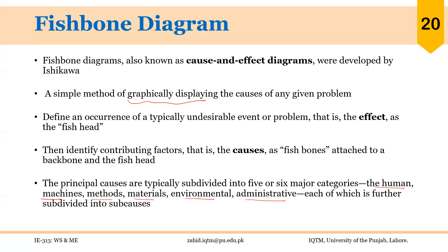Generally, the major categories are identified after brainstorming, but these six are typical causes of a problem. You can look for these categories as a guide to identify whether these are the major problems for the effect you are identifying. The process is continued until all possible causes are listed.